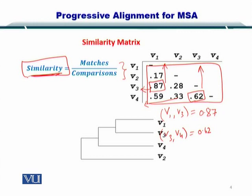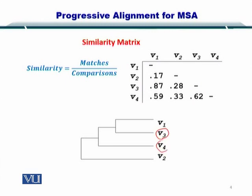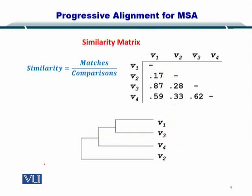Note that this is the similarity score, and now you want to create a guide tree. You can see that V1 and V3, which had the most similarity, are placed on the same branch. Next, V3 and V4 had a score of 0.62, meaning they were slightly less similar to V1 and V3 — so V4 is placed next to V3. And in the end, you have V2, which scored the least in comparison to the other sequences. In this way, you have constructed a guide tree.